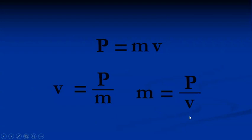If you get a question that gives you the momentum and the velocity, and it wants you to find the mass, then you would divide the momentum by the velocity. That would give you the mass. So all three of these are the same equation, just you would use different ones depending on what you're being asked for.